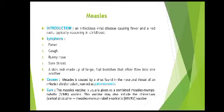Measles is an infectious viral disease causing fever and a red rash, typically occurring in children. Symptoms include fever, runny nose, sore throat, and a skin rash made up of large flat blotches that often flow into one another. Measles is caused by a virus found in the nose and throat of an infectious child or adult, named the paramyxovirus. The measles vaccine is usually given as a combined measles-mumps-rubella (MMR) vaccine, which may also include the chickenpox vaccine — measles-mumps-rubella-varicella (MMRV) vaccine.